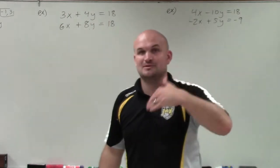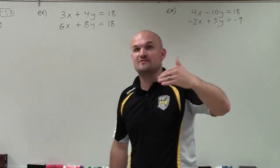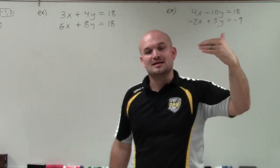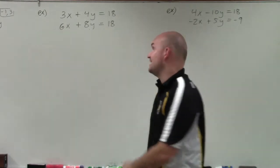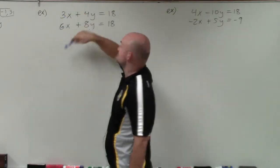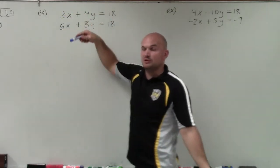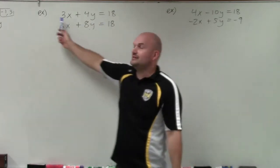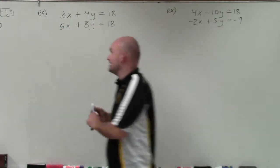So then the next thing to do is look for the variable that has coefficients with a common multiple that's pretty easy to obtain. Well, you can see that here, 3 and 6, their common multiple is 6. And for 4 and 8, their common multiple is 8. So to get the common multiples, all I need to do is multiply my top equation by 2.